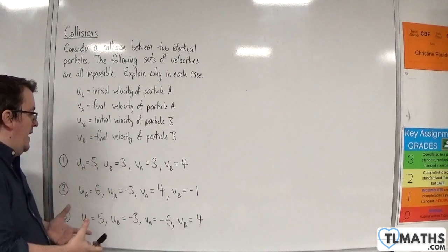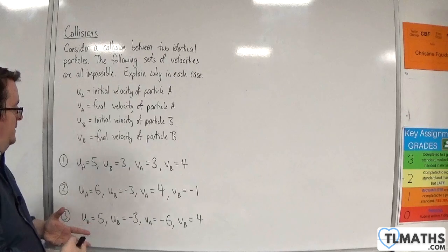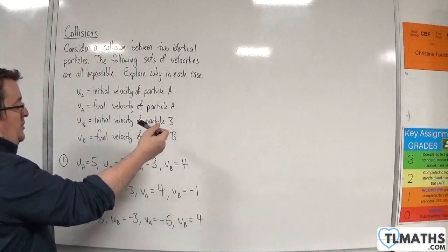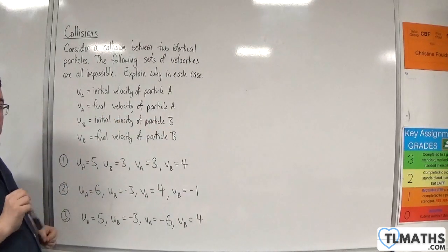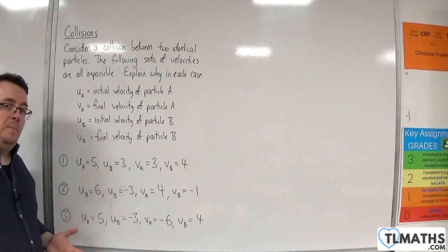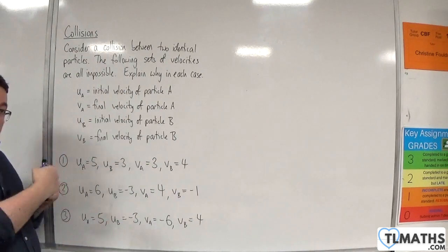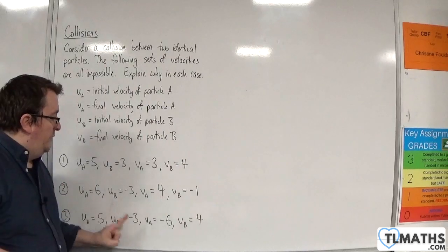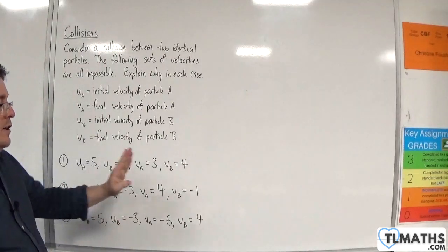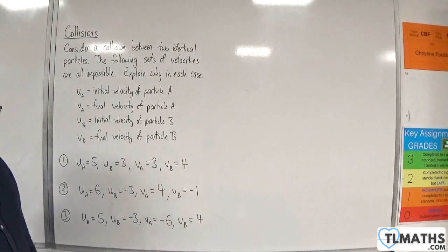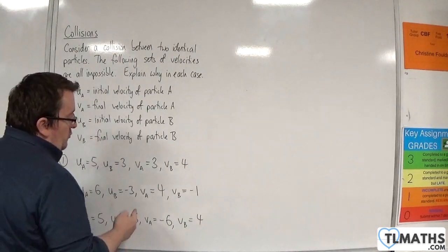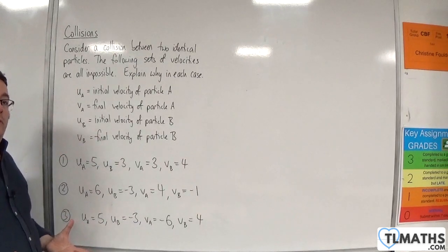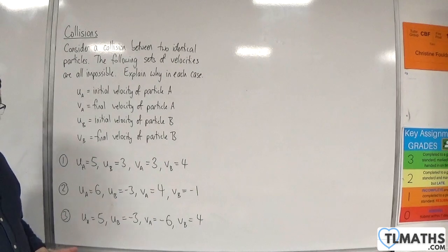But what you're seeing here, which you could spot without having to look at that, is that A is coming in at 5 meters per second, and it finishes up with minus 6 meters per second. So it has increased in speed. Even though it changes direction, it does increase in speed. B starts off at minus 3 meters per second, and then goes to 4 meters per second after the collision. So its speed has changed from 3 to 4 meters per second. It doesn't make sense that both particles would increase in speed after the collision.